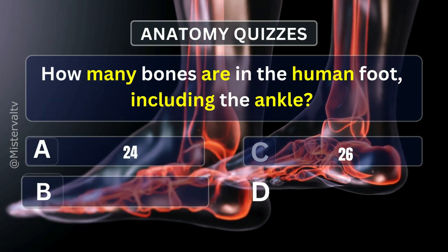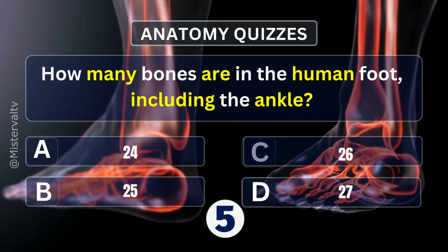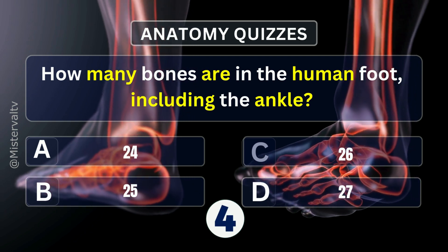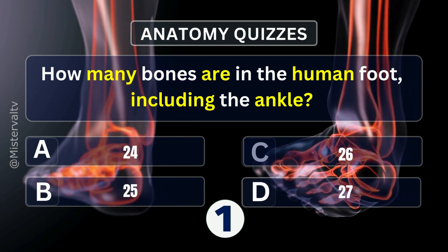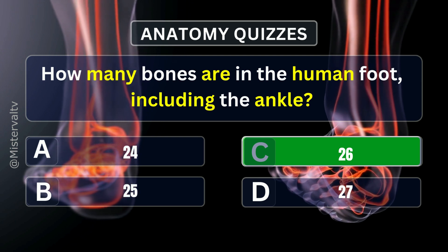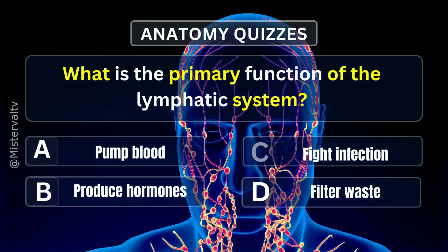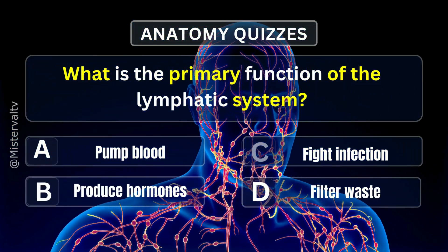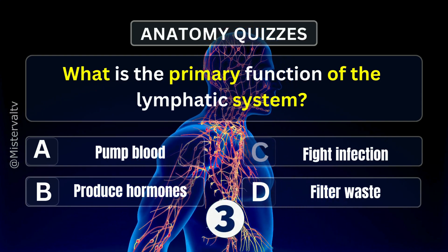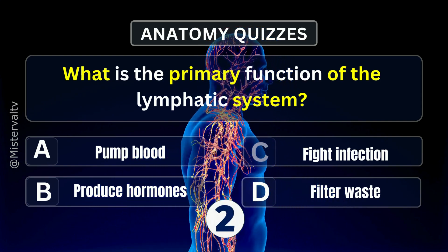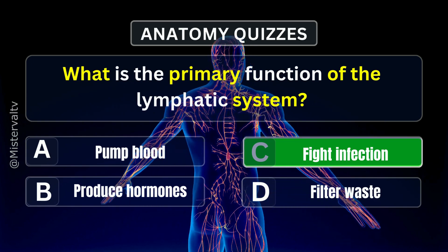How many bones are in the human foot, including the ankle? Answer. C. 26. What is the primary function of the lymphatic system? Answer. C. Fight infection.